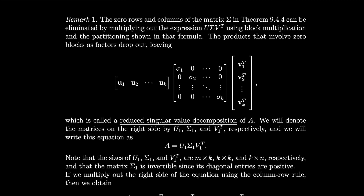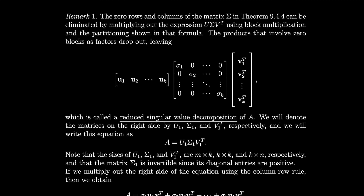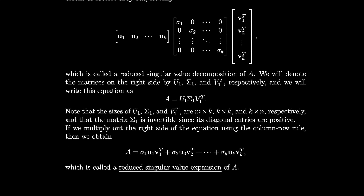If we multiply out the right side of the equation using the column rule, then we obtain A equals σ₁ u₁ v₁ᵀ plus σ₂ u₂ v₂ᵀ, and so on up until k, which is called a reduced singular value expansion of A.